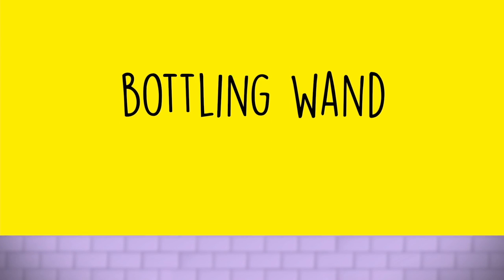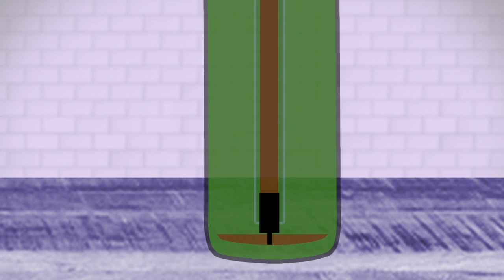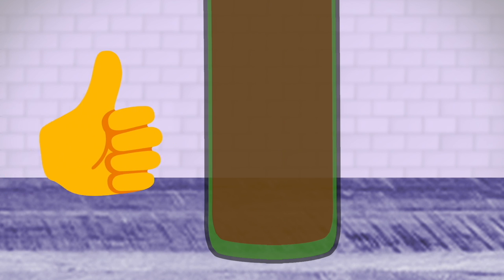Bottling wand. Once you're ready to bottle, you'll want some serious control over how the fermented brew gets from the carboy into the bottles. The bottling wand attaches to the end of your racking tubing and has a valve at the end. When pressed against the bottom of a bottle, the valve opens and your brew flows delicately into the bottle. Just lift when the bottle is full and move on to the next bottle.